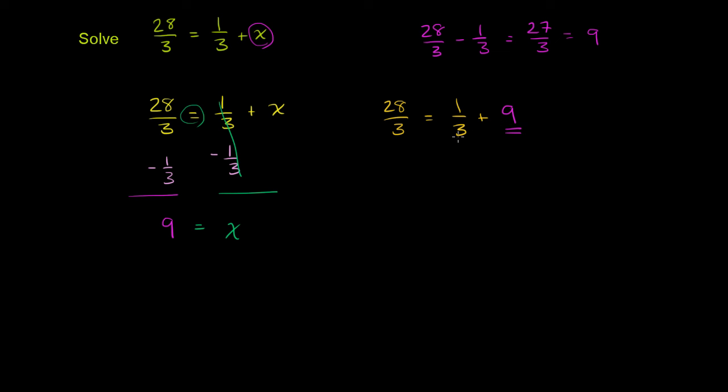we need a common denominator. 3 will work. So 9 is the same as 27/3. Then 1/3 + 27/3 = (1+27)/3 = 28/3. So it works: 28/3 = 28/3.